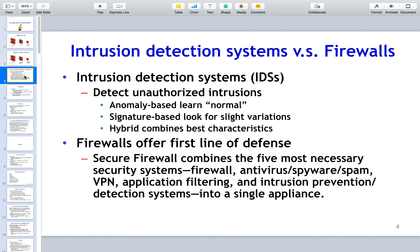Regarding the difference between intrusion detection systems and firewalls: firewalls are usually the first line of defense, and some can combine all kinds of different security systems like antivirus and spyware detection. They can be used for VPNs, application filtering, and some will have intrusion prevention and detection systems actually built into the appliance. A lot of next-generation firewalls implement intrusion detection and prevention systems — one of the best examples is Palo Alto firewalls.